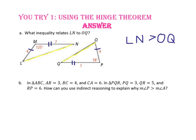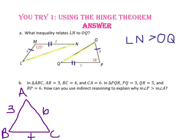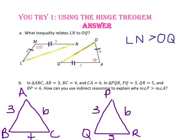For part B, in triangle ABC, the length of side AB is 3, the length of side BC is 4, and the length of side CA is 6. In triangle PQR, the length of side PQ is 3, the length of side QR is 5, and the length of side RP is 6. How can you use indirect reasoning to explain why the measure of angle P is greater than the measure of angle A? Since angle A is opposite the side that has a length of 4 and angle P is opposite the side that has a length of 5, indirect reasoning tells us that since the length of QR is longer than the length of side BC, angle P should have a greater measure. It must be open more at the hinge so that this distance is longer.